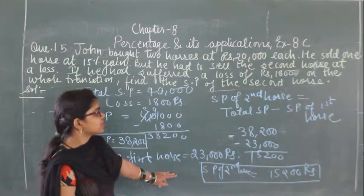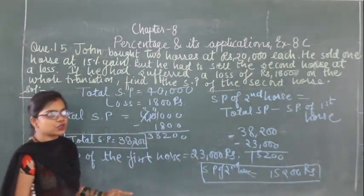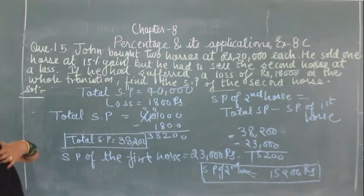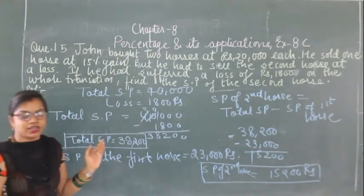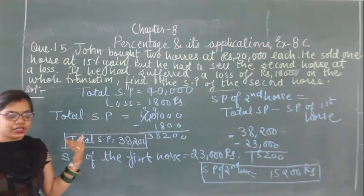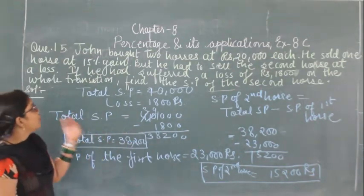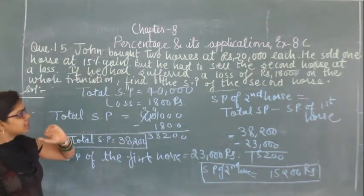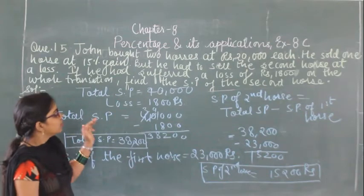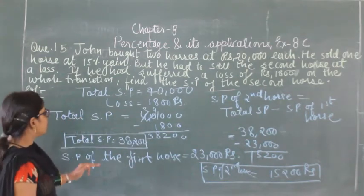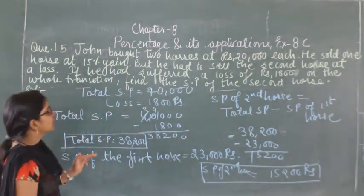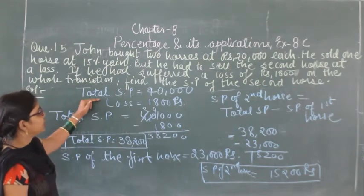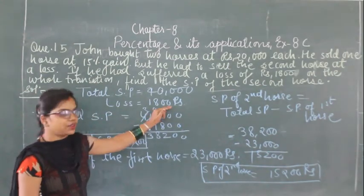In this question, the cost price of each horse was ₹20,000, making the total ₹40,000. A 15% gain was given for the first horse, so the selling price of the first horse is ₹23,000. There was a total loss of ₹1,800 on the transaction.